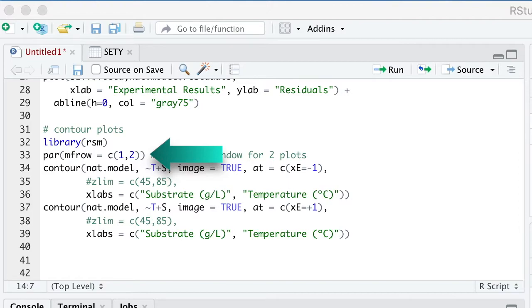In the second line, as we have two plots, I am creating a grid of one row and two columns for the plots. Then we have the contour plot of the natural model results as a function of temperature and substrate for enzyme E1, and the contour plot for enzyme E2. Let's run.